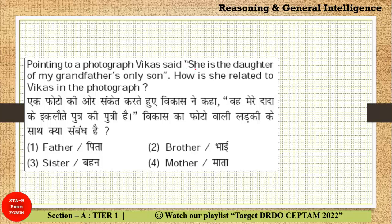Let's read the first question — Type 1: 'Pointing to a photograph, Vikas said: she is the daughter of my grandfather's only son. How is she related to Vikas?' The trick is to start from the backward. 'My grandfather's only son' — this is Vikas, this is his father, and this is his grandfather. Since all are male, we use the positive symbol. Names are not given so we use the O symbol. Now, 'she is the daughter of grandfather's only son' — that only son is Vikas's father.